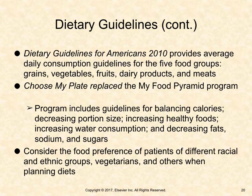The Dietary Guidelines for Americans 2010 provides average daily consumption guidelines for the five food groups: grains, vegetables, fruits, dairy products, and meats. Choose MyPlate replaced the MyFood Pyramid program, including guidelines for balancing calories, decreasing portion size, increasing healthy foods, increasing water consumption, and decreasing fats, sodium, and sugars. Nurses should consider food preferences of patients from different racial and ethnic groups, vegetarians, and others when planning diets.